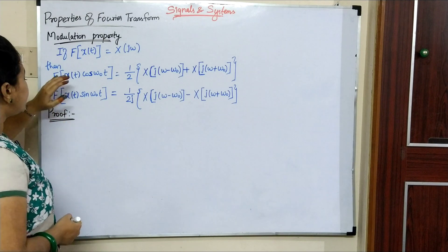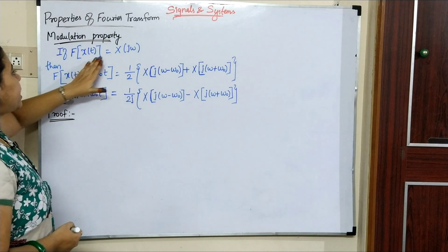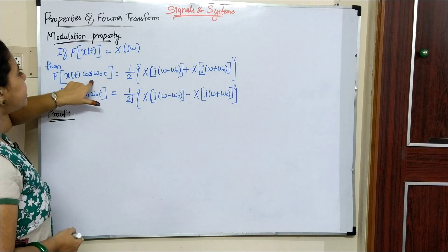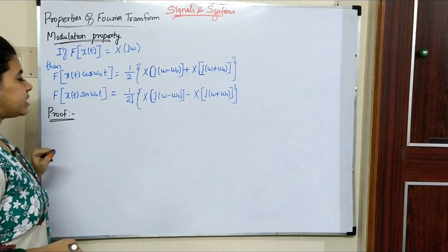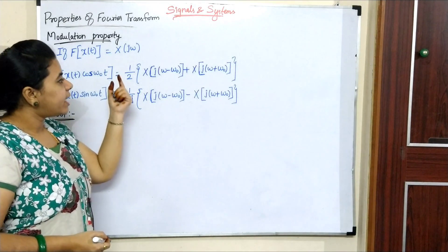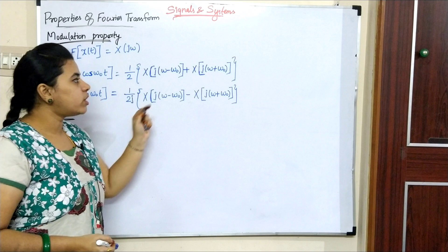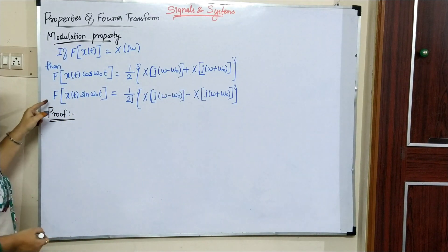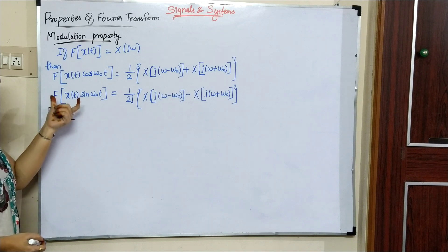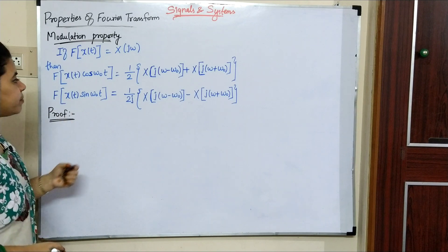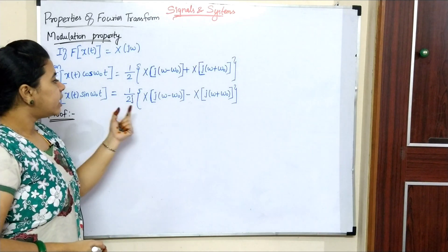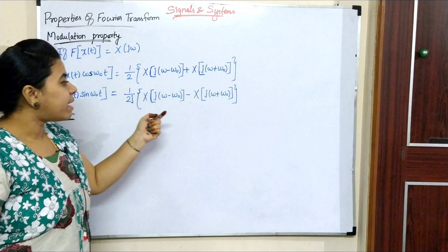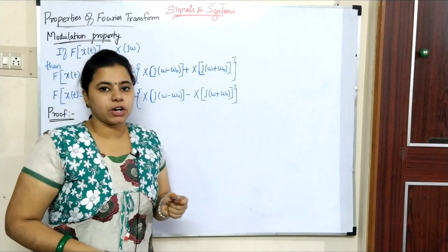Next, the modulation property. If the Fourier transform of x(t) equals X(jω), then the Fourier transform of x(t)·cos(ω₀t) equals (1/2)·[X(j(ω−ω₀)) + X(j(ω+ω₀))]. Similarly, the Fourier transform of x(t)·sin(ω₀t) equals (1/2j)·[X(j(ω−ω₀)) − X(j(ω+ω₀))].